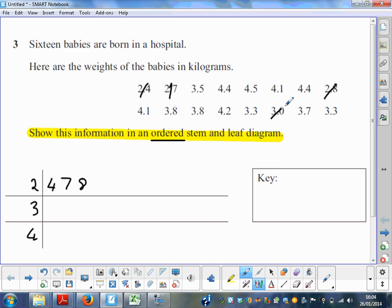I know there are some 3.0, 3.0, then 3.3 and 3.3, so two of them, one and two.